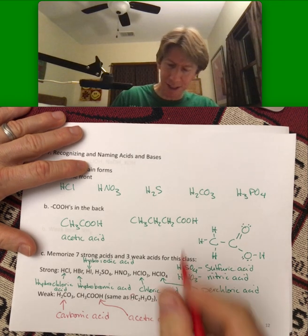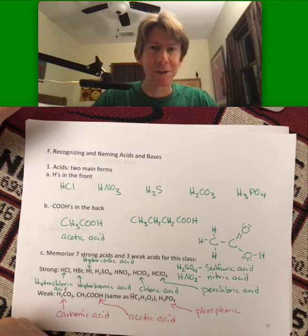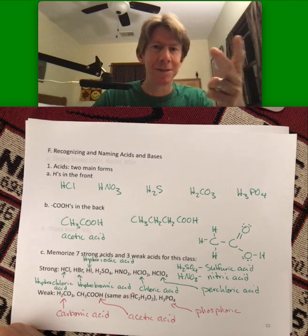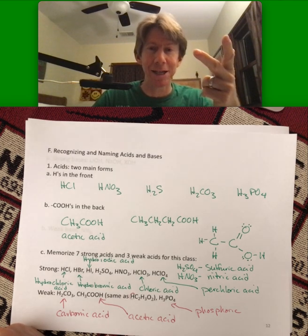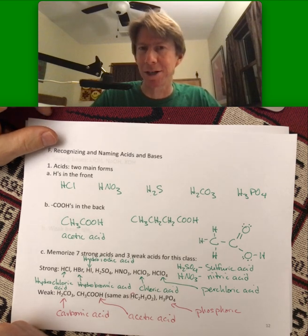Any other time you see an H in the front or a COOH in the back, it's an acid, but you don't have to know it. You'll run into them - ascorbic acid, citric acid, glycine is an amino acid. Lots of them to see. These are the 10 you will be quizzed on later on.